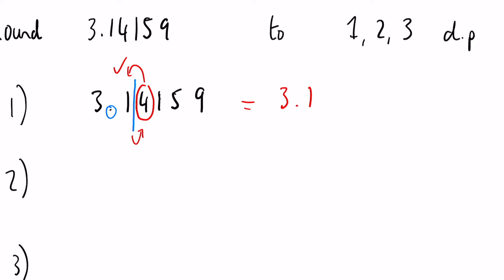Okay, let's see how that changes if it's 2 decimal places. So again, 3.14159, start at our decimal point, we go 1, 2 decimal places, and we can draw our line in there just like before.